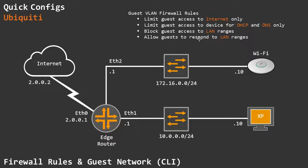We also want to limit access to the device for DHCP and DNS only, so we do not want our Wi-Fi clients to access the management interface — the web page, shell, Telnet, SSH — we don't want them to access any of that. We just want them to get a DHCP address and use our router for DNS services and for going out to the internet. We also want to block access for these guests to our LAN ranges so they can't reach our trusted hosts.